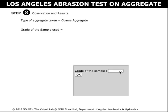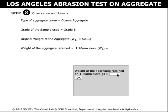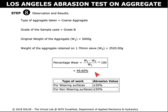The grade of the sample used is Grade B. Note the original weight of the aggregate and the weight of aggregate retained in the 1.70 mm sieve. These are the observations and results of the current simulation. We can calculate the percentage wear using this formula. Enter the calculated value in the column and check the result. The inference drawn from this simulation is seen here.